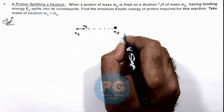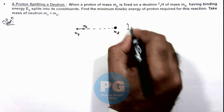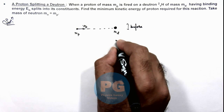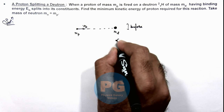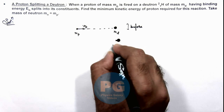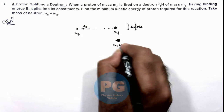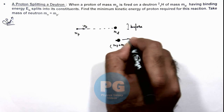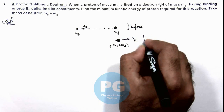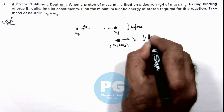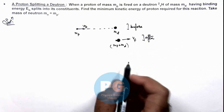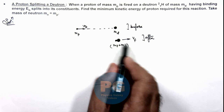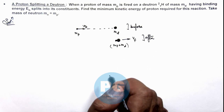So after collision, if this is the state before collision, and after collision these 2 particles of mass mp plus md both move together with the final velocity vf, then this is the state after collision. This is the case of a perfectly inelastic collision in which maximum energy loss will take place.